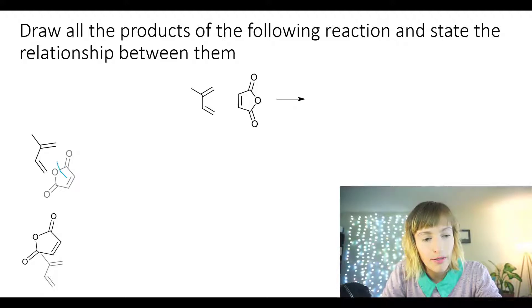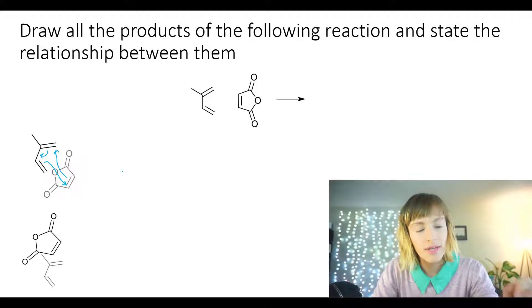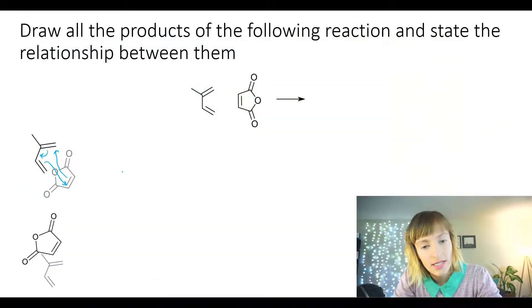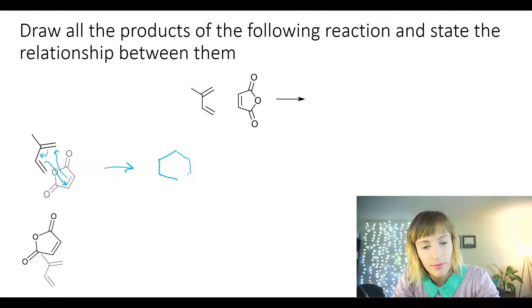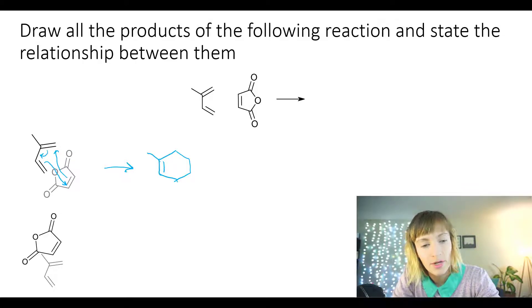The electrons from the double bond come over here to make a new sigma bond. These electrons come over here to make a new pi bond. And then these come over to this carbon to make a new sigma bond. When that happens, you can envision the maleic anhydride sort of turning upward — the carbonyl groups going upward — in order to make our six-membered ring. So let's draw the product: we have our six-membered ring, the methyl group is still there, the new double bond is formed right here. And now we're going to draw the rest of this maleic anhydride that's become attached to the six-membered ring. Let's draw the five-membered ring, then we'll deal with the stereochemistry.